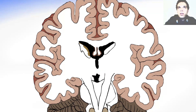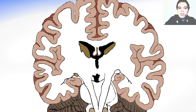Of course, we have the caudate nucleus on both sides over here and here. And down there you can notice the optic tracts — this is the optic tract.